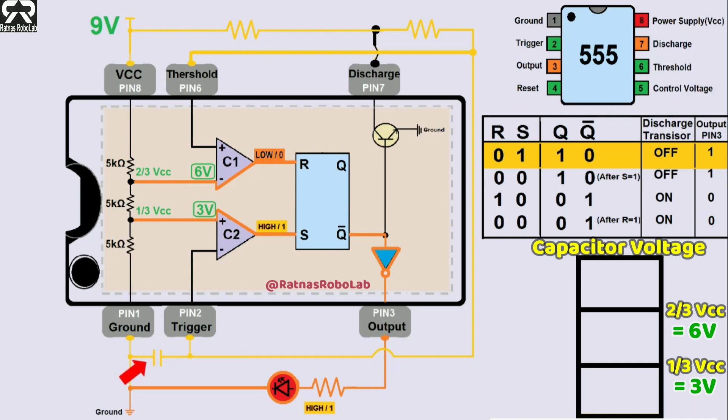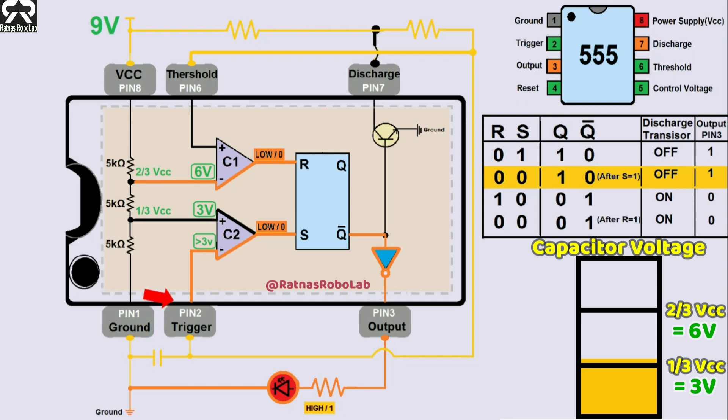The capacitor charges and when the voltage is above 1/3 Vcc or above 3V, comparator 2's negative terminal takes priority and comparator 2's output becomes low.